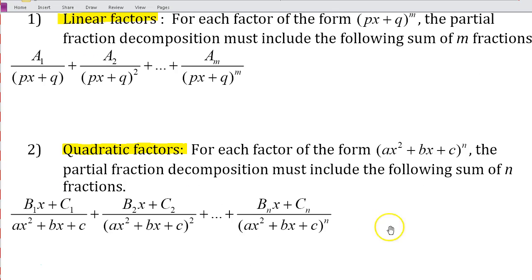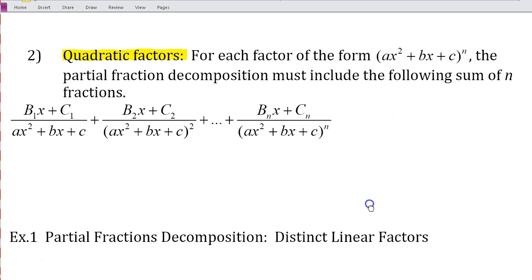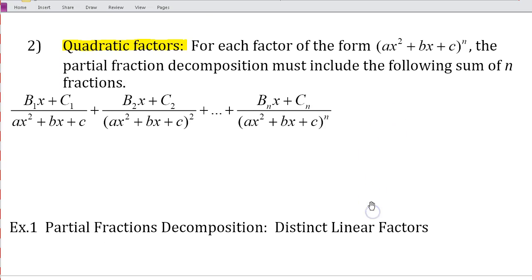So those are linear factors. Then when we have quadratic factors, for each factor in the form of ax squared plus bx plus c raised to the n, the partial fraction decomposition must include the following sum of n fractions. So now you'll see I have my quadratic in the denominators. So here's my quadratic raised to the first, here's my quadratic raised to the second, all the way up to the quadratic raised to the n.